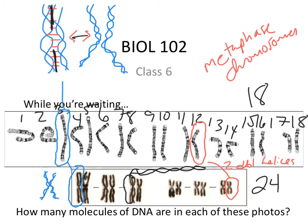A student asks whether the first picture has 19 chromosomes or 18. I frequently do this — please call me out when I don't follow through with the exercise. Is this 18 or 19 chromosomes? Every one of these numbered objects represents how many molecules of DNA? Two. So that's 36 double helices in that picture. Thank you for pointing that out.